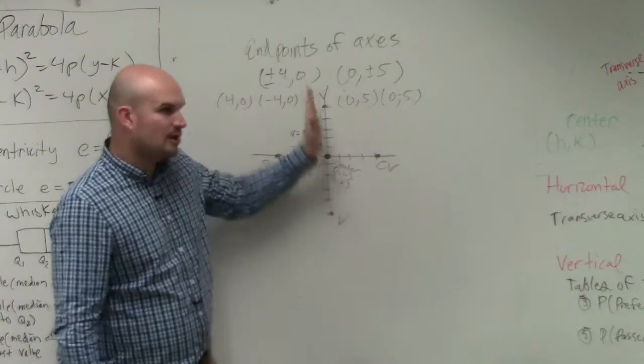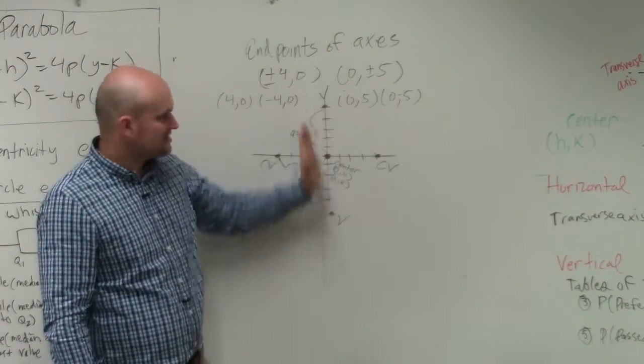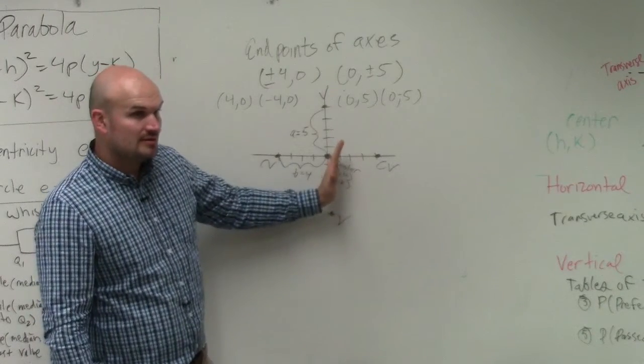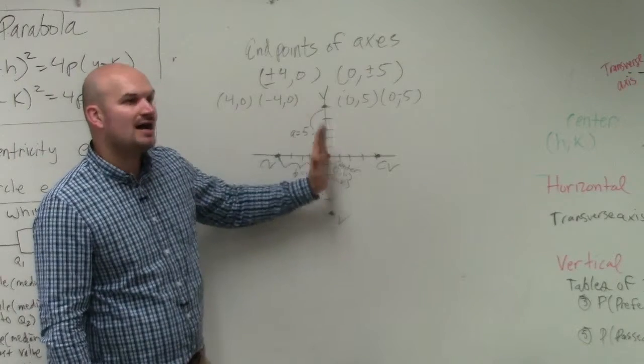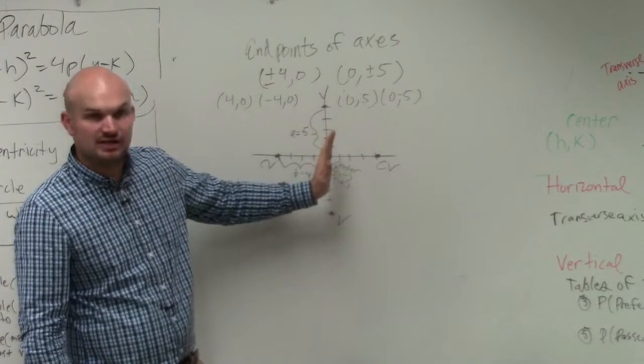So this is now what we call my major axis, right? That's the side that my vertices lie on is the major axis. If my major axis is vertical, the a is under the y, is under the y in the equation, in the formula.